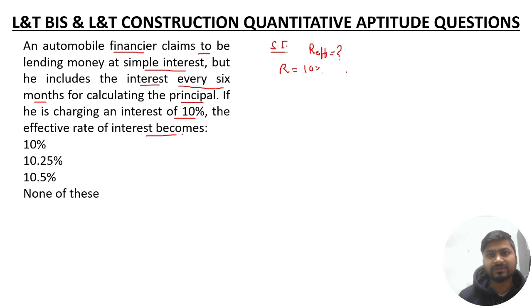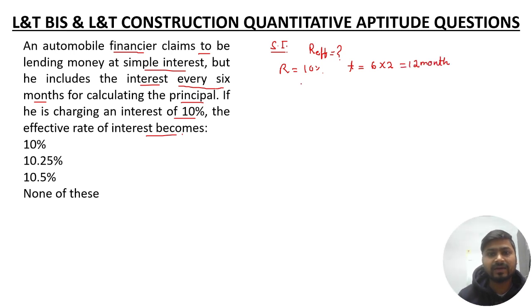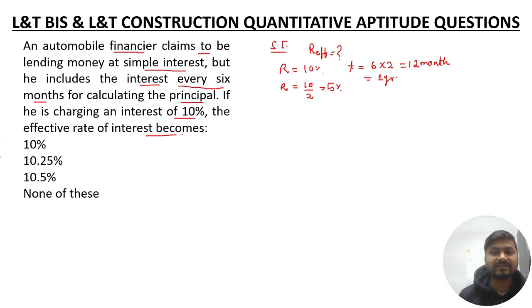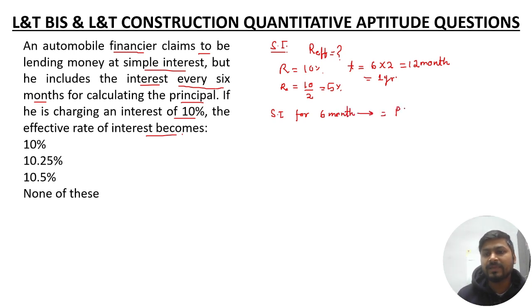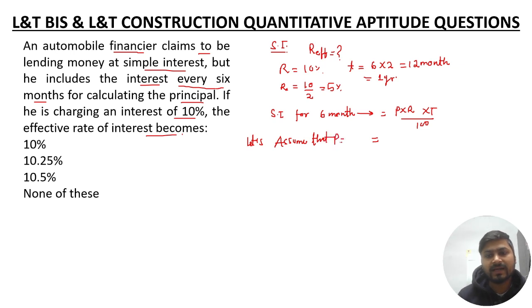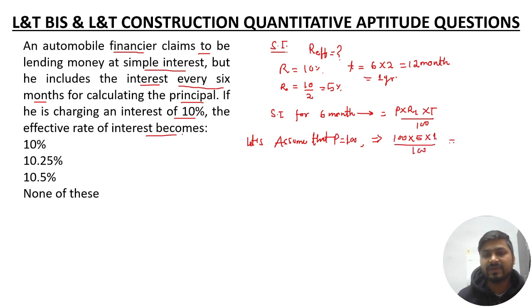When interest is charged every six months, the time becomes six months multiplied by two, which is 12 months — that is one year. The rate for each period becomes half, so R1 becomes 5 percent. Let's calculate the simple interest for the first six months. Using SI = P × R × T / 100, assuming P = 100: SI1 = 100 × 5 × 1 / 100 = 5.